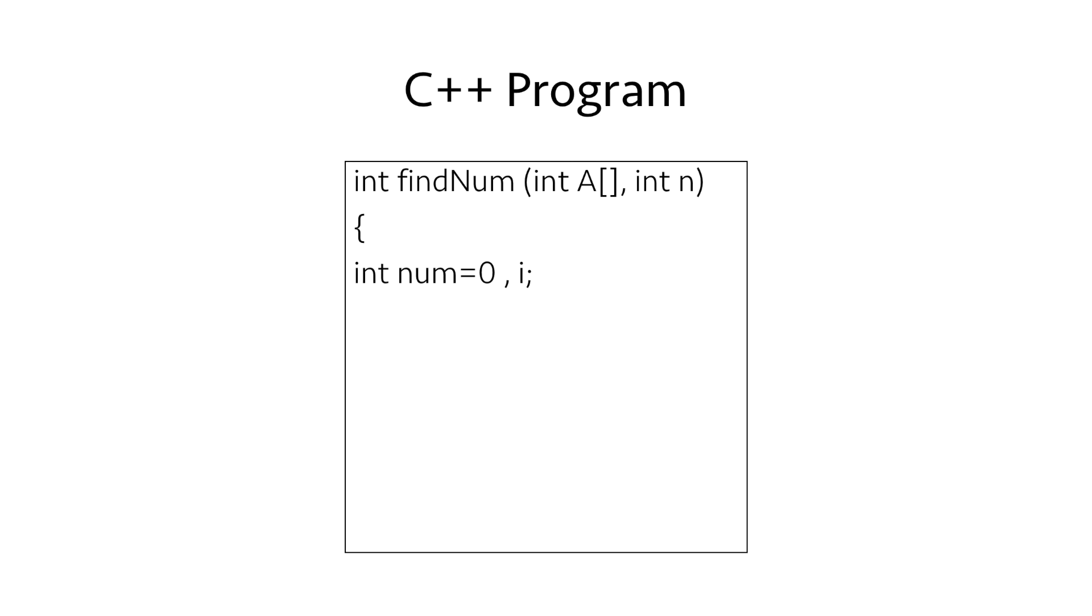Then we declare our variable num and equate it to 0 and a variable i to iterate over the array. Next we start our for loop for i equals 0 and i less than the size of the array and we XOR every element of the array with num.